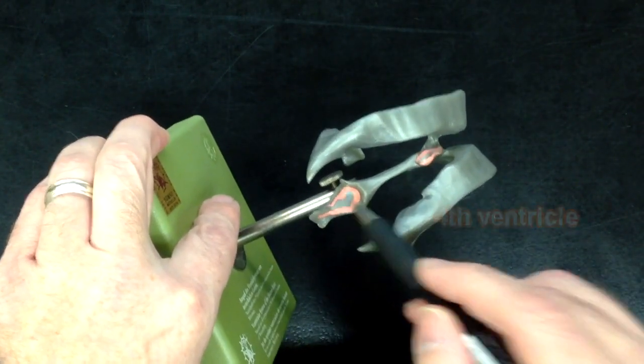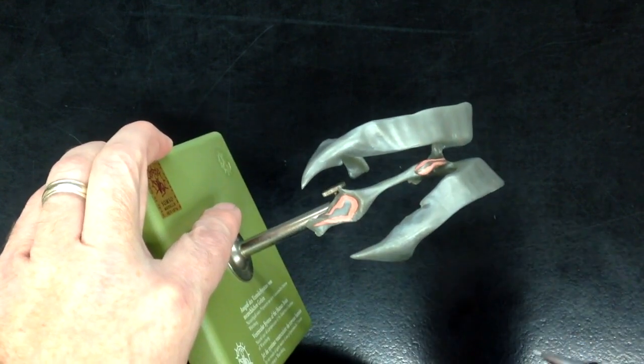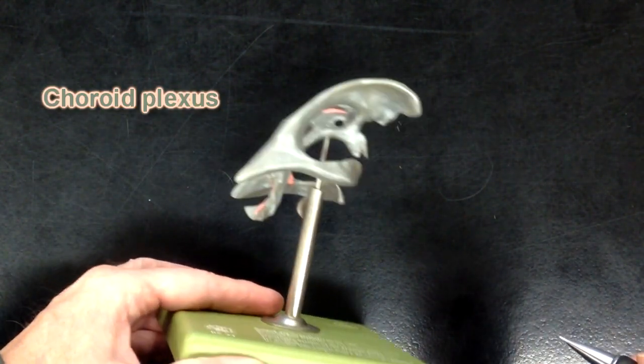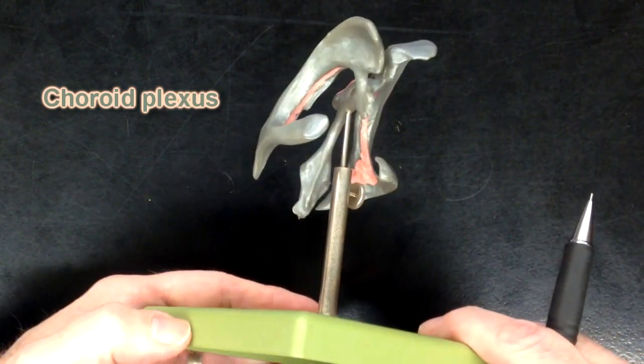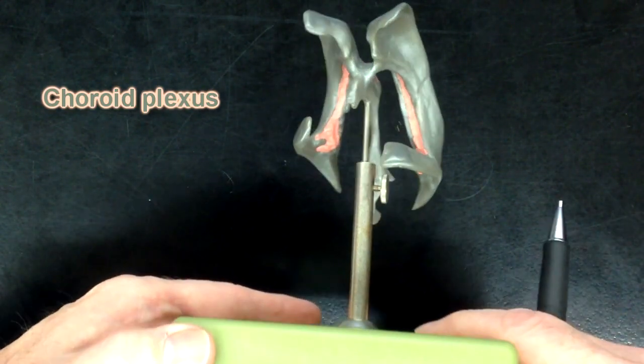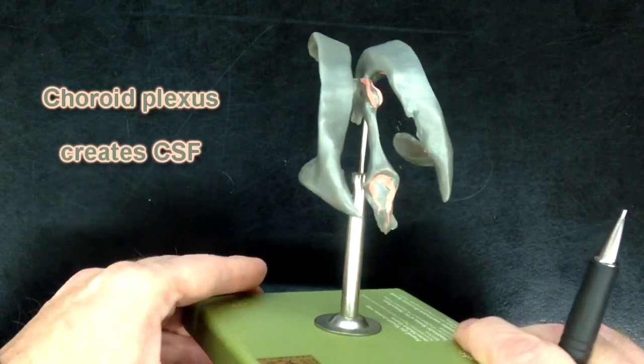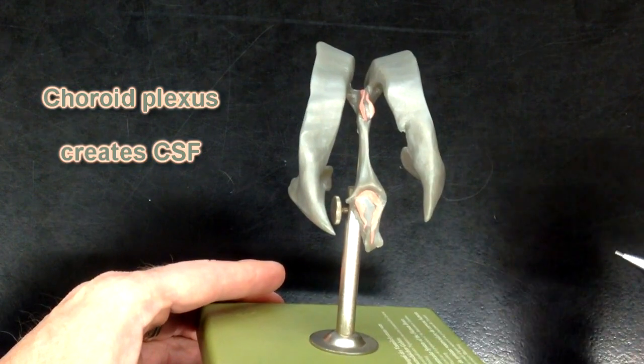Now this pink stuff on this model, that pink stuff is going to be the choroid plexus. And the choroid plexus is going to be the structure that would create the cerebrospinal fluid.